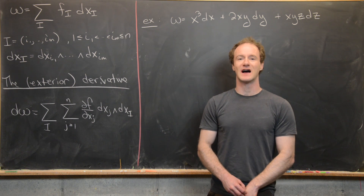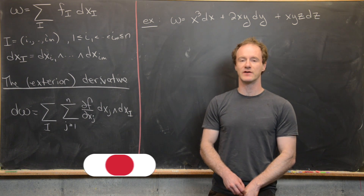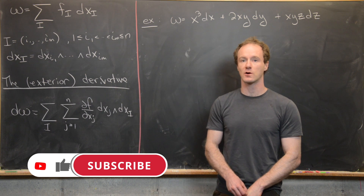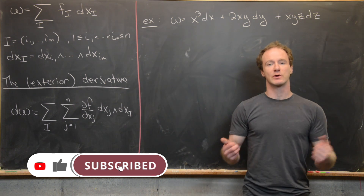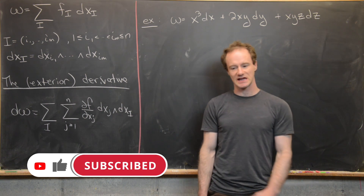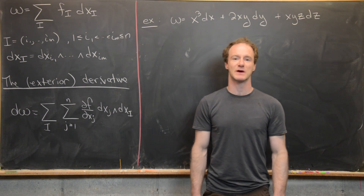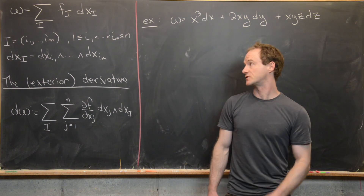In a previous video, we defined the notion of the exterior derivative on a differential M-form on R^n. Now we want to review that and look at a couple of examples and prove a couple of special properties of this derivative.